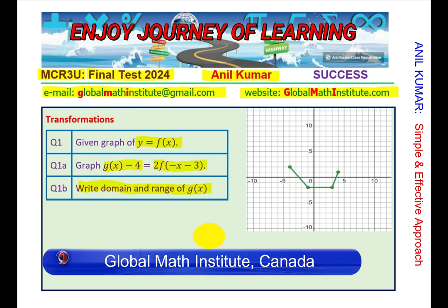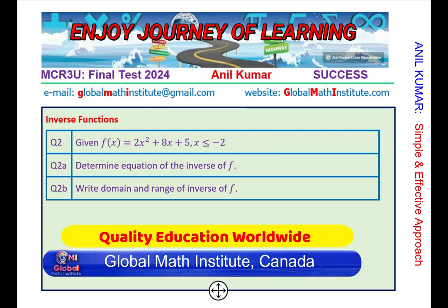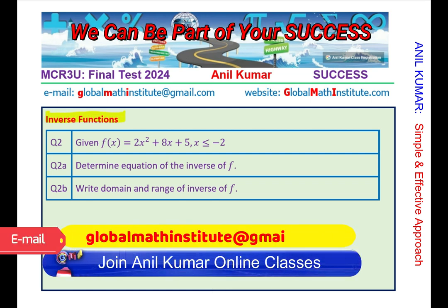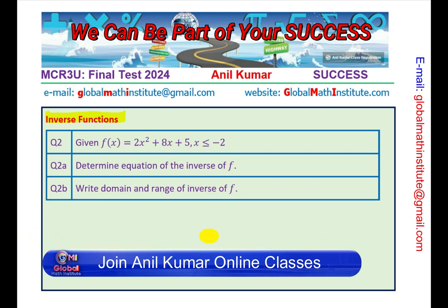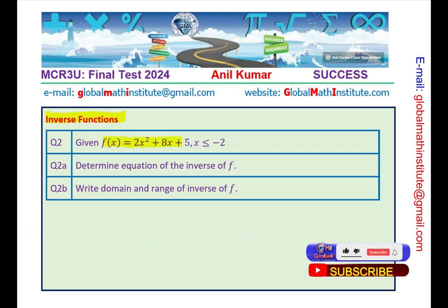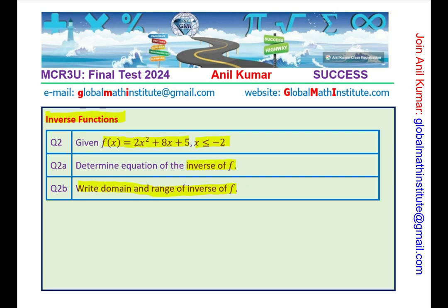Let's move on to the next question which is based on inverse functions, Question number 2. Given f(x) = 2x² + 8x + 5 where x is less than or equal to minus 2, determine the equation of the inverse of f. Write down the domain and range of the inverse of f.